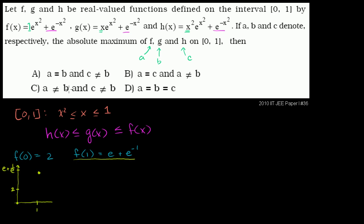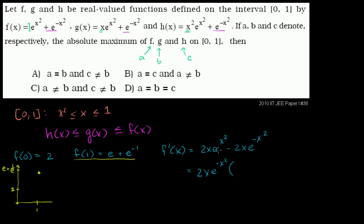So let's calculate the derivative. f'(x) = 2x·e^(x²) − 2x·e^(-x²), using the chain rule. We can factor out 2x·e^(-x²), giving f'(x) = 2x·e^(-x²)·(e^(2x²) − 1). This is the slope over the interval — what is this doing at any point?